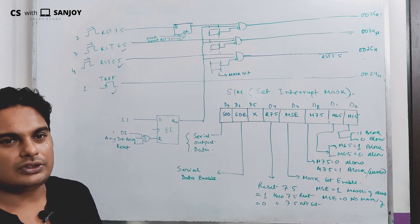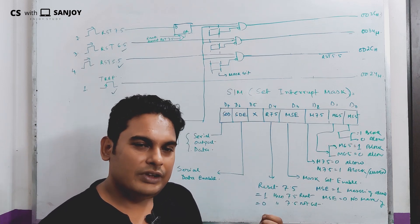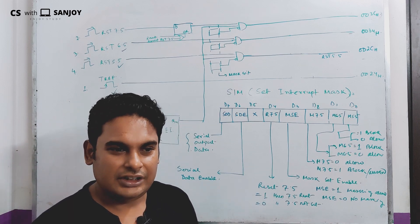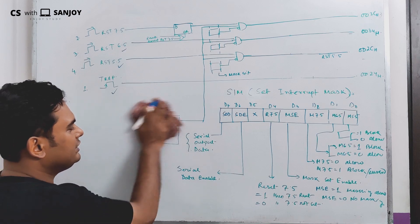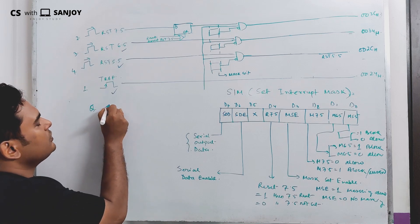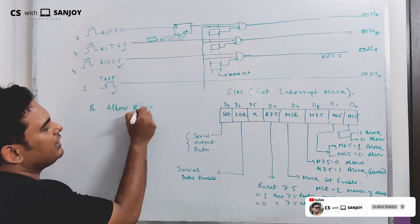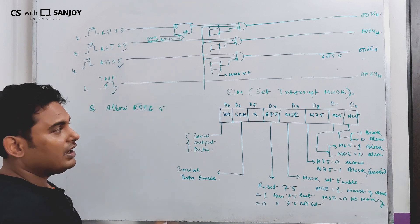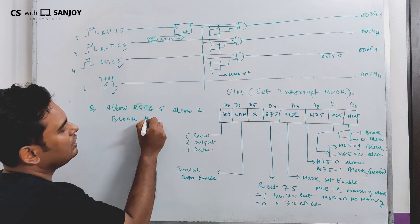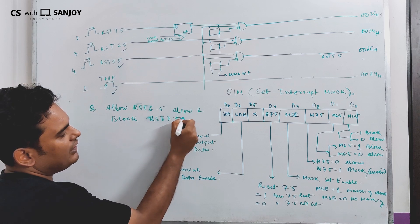Let me take an example: Write a program that will allow RST 6.5 and block the other interrupts — that is, block RST 7.5 and RST 5.5, and allow RST 6.5.